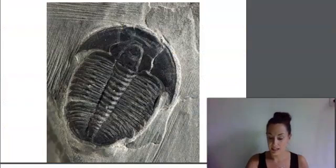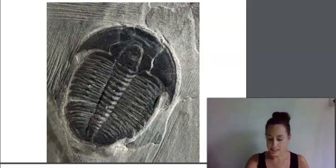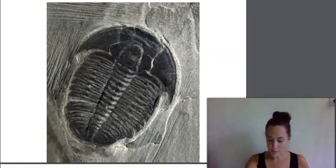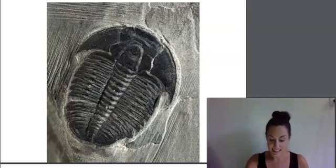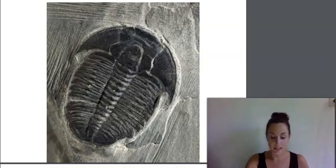This is a fossil of a trilobite, an animal that some scientists believe lived about 550 million years ago. Trilobites may look like insects, but they are more closely related to lobsters and crabs. They came in many varieties, from a half inch up to 28 inches in length. They had antennas, lots of legs, and a hard outer shell called an exoskeleton. The exoskeleton meant that dead trilobites were easily fossilized when they became buried in the sand.